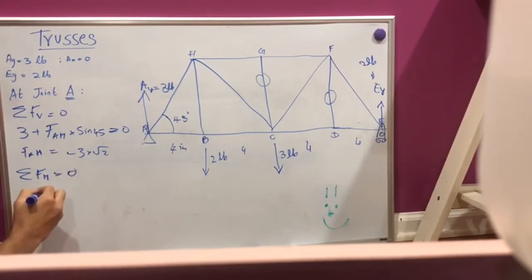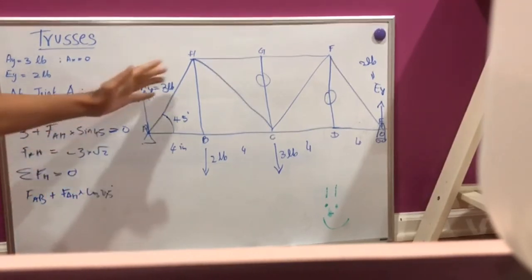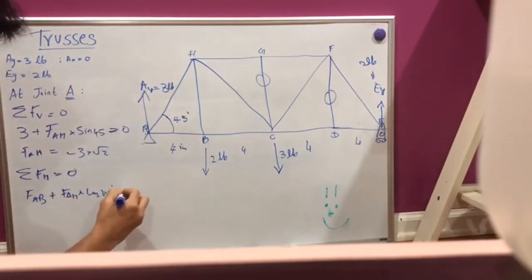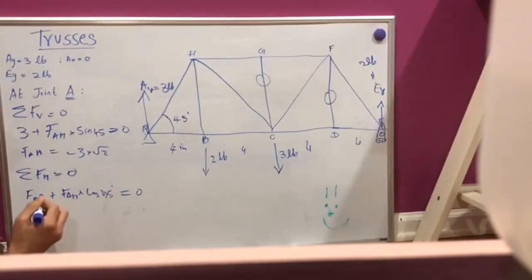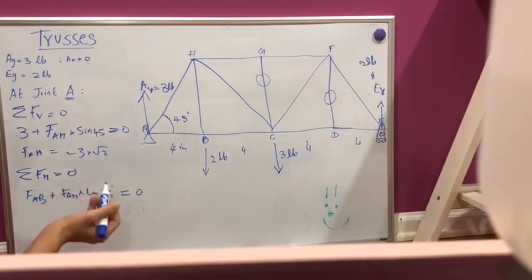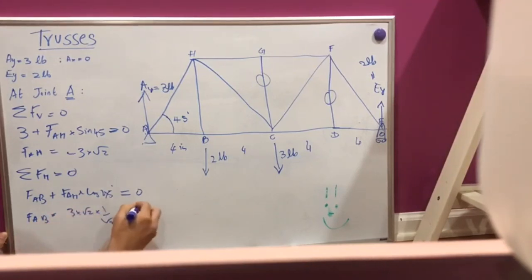Cos 45 because we're taking care of the horizontal is going to be zero. We know FAH is going to be minus 3 into 1 by root 2. So FAB is going to be minus 3.